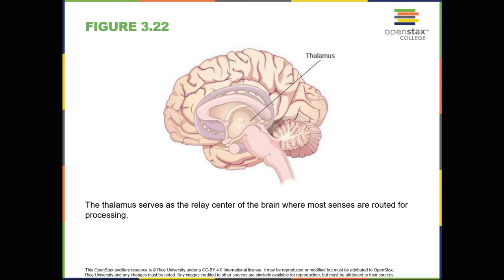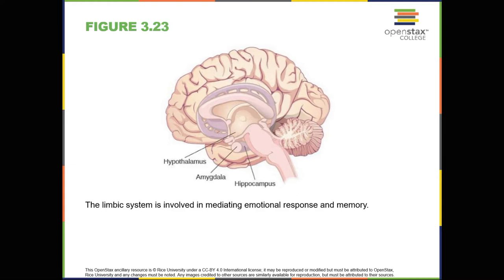Other areas of the forebrain. Other areas of the forebrain located beneath the cerebral cortex include the thalamus and the limbic system. The thalamus is a sensory relay for the brain. All of our senses, with the exception of smell, are routed through the thalamus before being directed to other areas of the brain for processing. The limbic system is involved in processing both emotion and memory. Interestingly, the sense of smell projects directly to the limbic system. Therefore, not surprisingly, smell can evoke emotional responses in ways that other sensory modalities cannot.